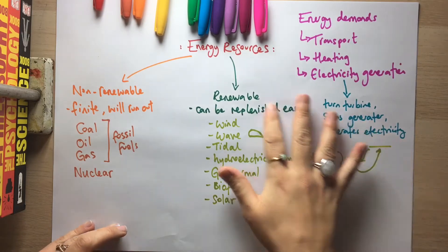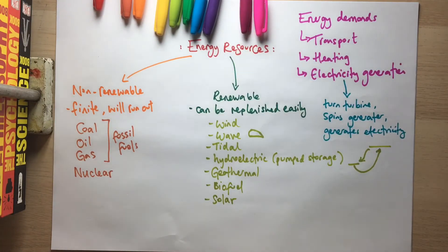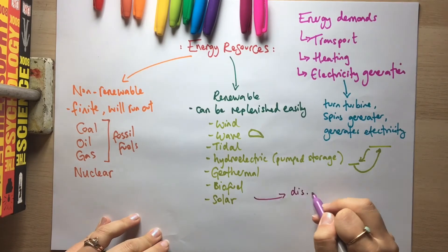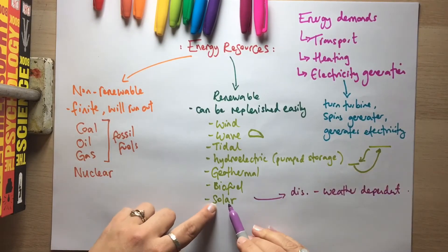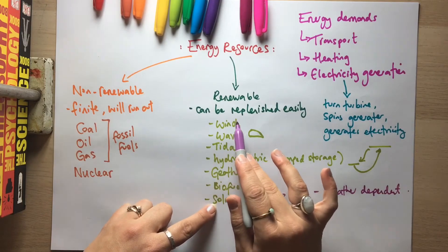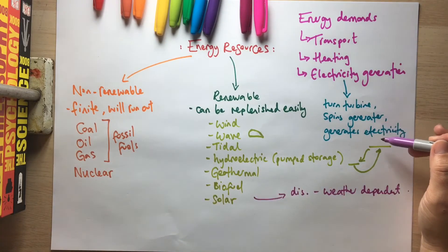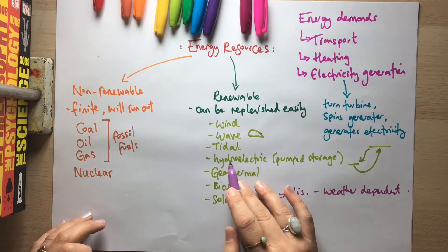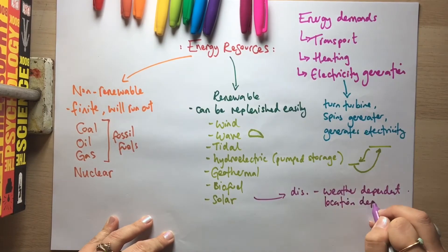You need to know how each energy resource works and be able to think of advantages and disadvantages. A common disadvantage of renewables is that they are often weather dependent. Solar is dependent on weather; waves and wind are weather dependent; tidal is not really weather dependent; hydroelectric can be affected by drought, reducing water in the reservoir. Geothermal and hydroelectric are also location dependent, as are tidal and wave.